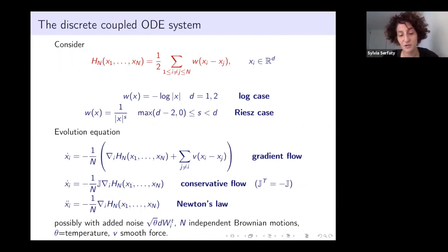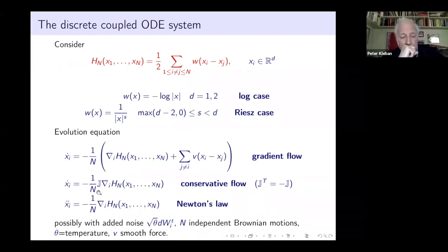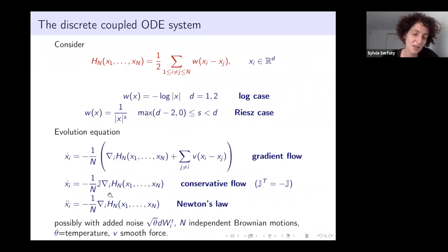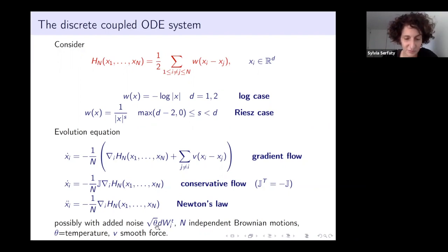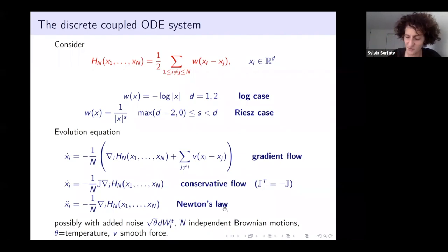The second example is a conservative flow, a Hamiltonian flow, where you apply an anti-symmetric operator to the gradients. A famous example is the point vortex system: take a log interaction in 2D, let J be rotation by pi over two—it's anti-symmetric—and that's just the point vortex system. Then there's Newton's law, where acceleration equals the average force. You can also add diffusion with temperature theta and independent Brownian motions, which I'll discuss later.